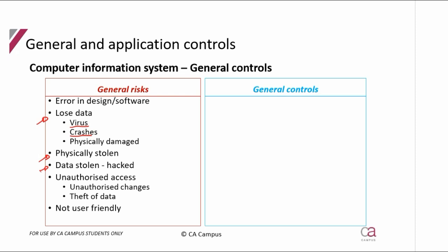Those are risks that the client faces in having a computer information system. There could be a virus that gets onto their system and they lose data. It could crash. They could physically damage their hardware, which could affect the software. It could get stolen — people come in and steal their computers — or data could be stolen if their systems get hacked. There could be unauthorized access by hackers, or by people whose access should be limited but who are able to gain further access.